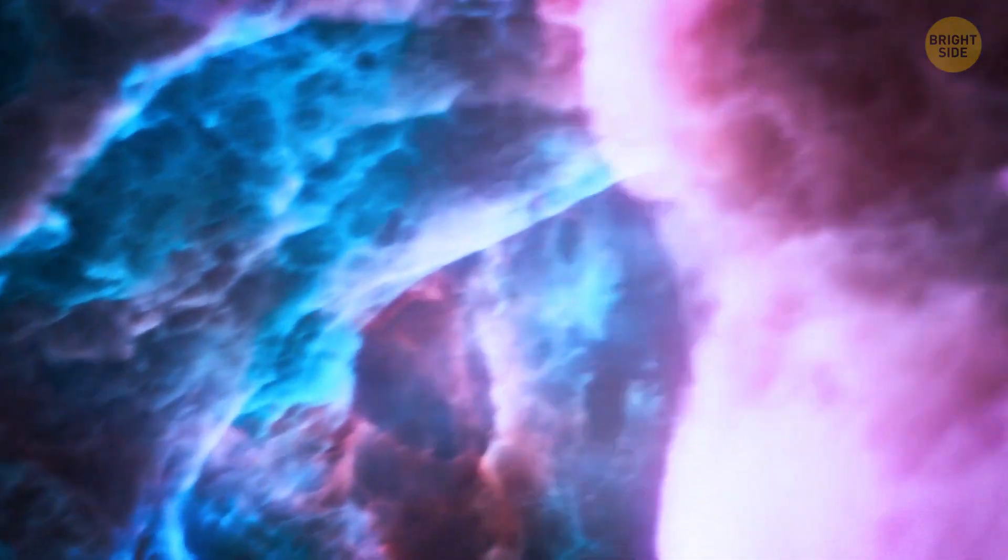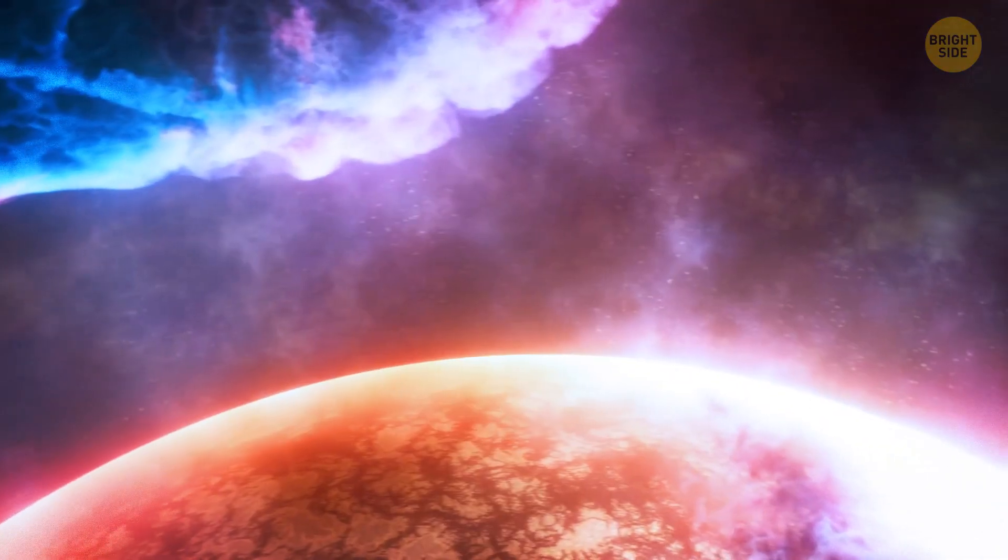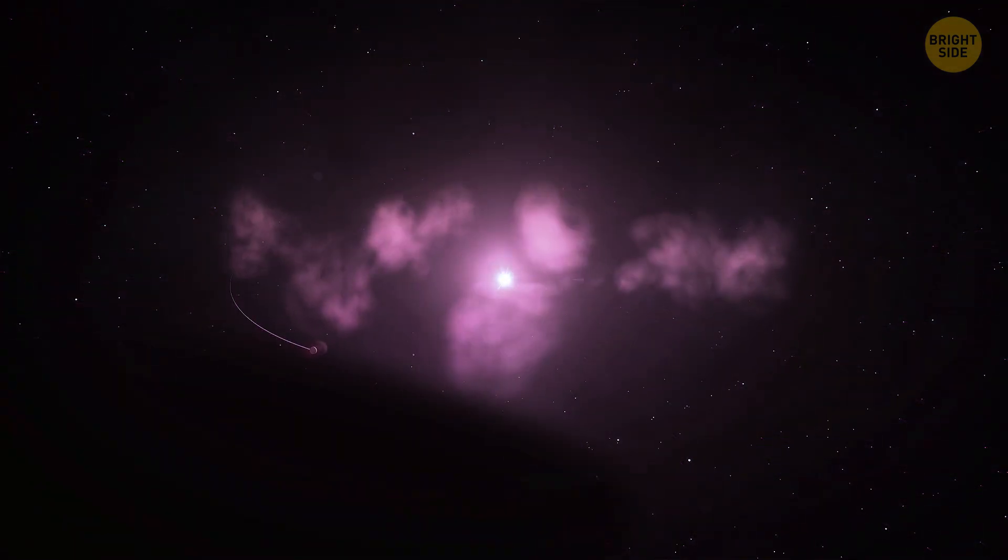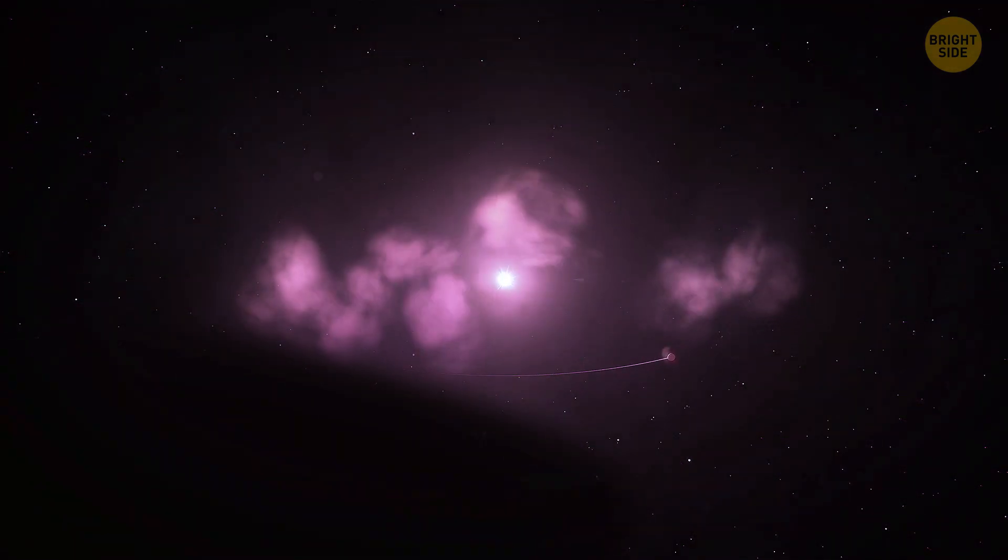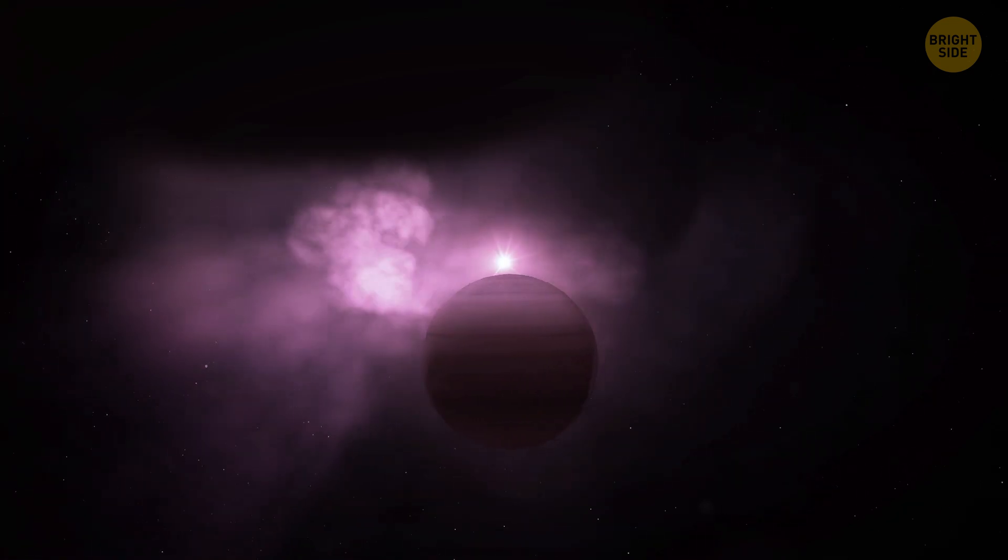Their fluffiness might be caused by their parent stars. Those heat them, puffing them up like a marshmallow that's seen too much campfire action. The planet's super low density makes it a real anomaly among those 5,000-plus exoplanets we have already discovered.